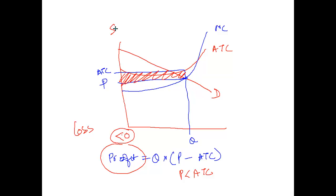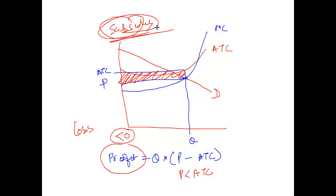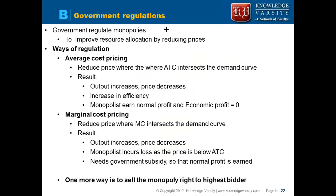So the firm should be given a subsidy. Think about railways — the government gives subsidies to railways in the form of grants. If you are asking a firm to price below its average total cost, you have to grant them a subsidy. Output increases and price decreases, but the monopolist incurs a loss if the price is below ATC, so it needs a government subsidy so it can earn accounting profit or normal profit.